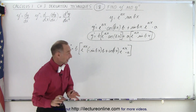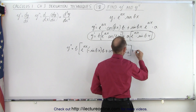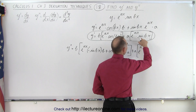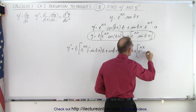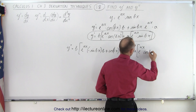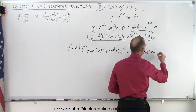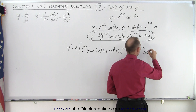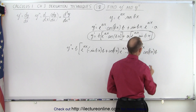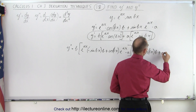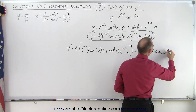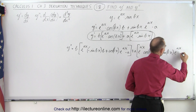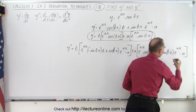Now we do the same for the second term right here, so we have plus a times: the first, e to the ax, times the derivative of the second — the derivative of sine is cosine, so we have the cosine of bx times the derivative of bx which is b, plus the second which is the sine of bx times the derivative of the first, which is e to the ax times the derivative of the exponent, a.